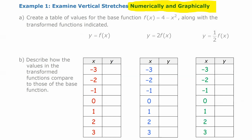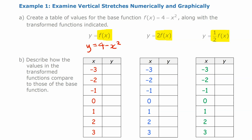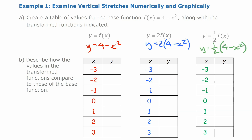We're going to look numerically and graphically at vertical expansions and compressions using a specific base function: y equals f of x, or specifically y equals 4 minus x squared. We're going to change f of x to 2f of x, and also to one-half f of x. So 2f of x is 2 times (4 minus x squared), and one-half f of x is one-half times (4 minus x squared).